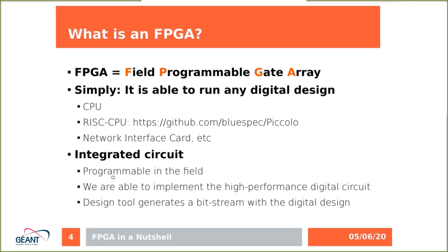The big advantage of the FPGA is that it is programmable in the field. You can implement high-performance digital circuits. For example, if you want to process network traffic at 100 gigabits per second, you can implement hardware capable of doing that. You develop the digital design from a design tool, generate a bitstream, which is then loaded into the FPGA, and then the FPGA works as you described.